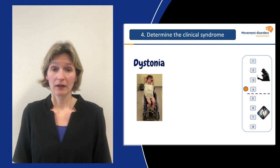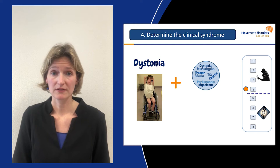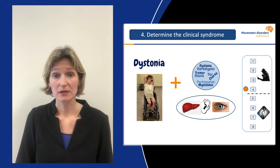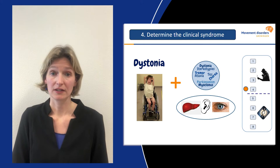Now it's time to define the clinical syndrome. We know he has dystonia, and we need to look for other movement disorders, and also for additional neurological and non-neurological features. This is important because the clinical syndrome is the starting point for diagnostic testing. Our patient did not have any additional features, so in this case the clinical syndrome is isolated generalized dystonia.